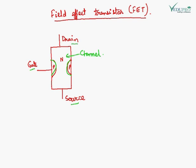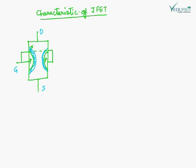If it is a P-channel, then this portion will be N-type. A junction is shown here. Now we will see the characteristics of the field effect transistor. This is the unbiased condition of JFET — when there is no voltage applied, this is the depletion layer created here and here.